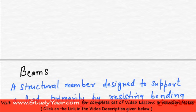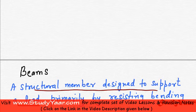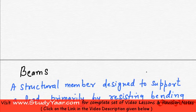A beam is defined as a structural member which is designed to support a load primarily by resisting bending. So beam is something that can resist bending, that can resist deformation when a load is applied to it.